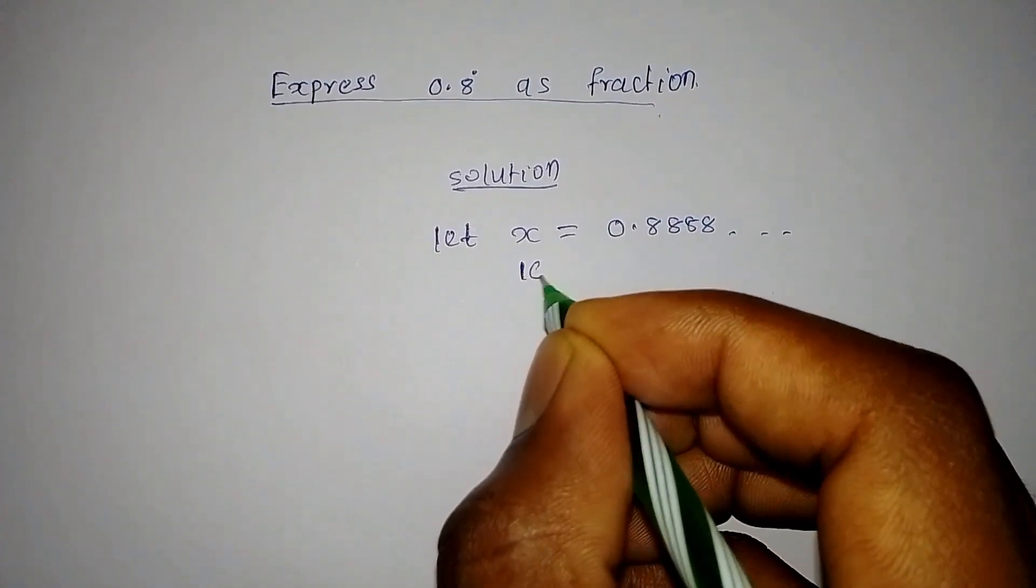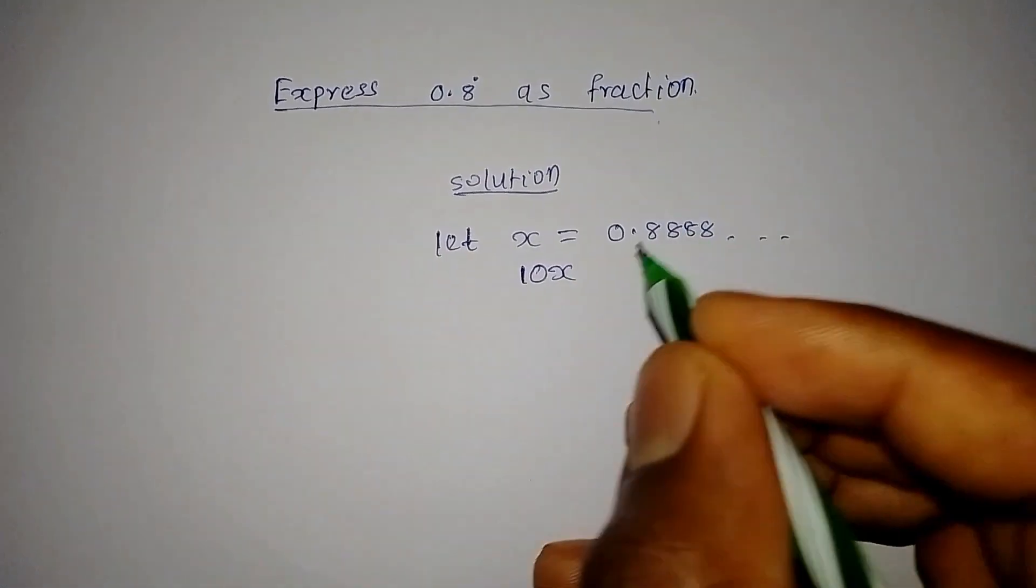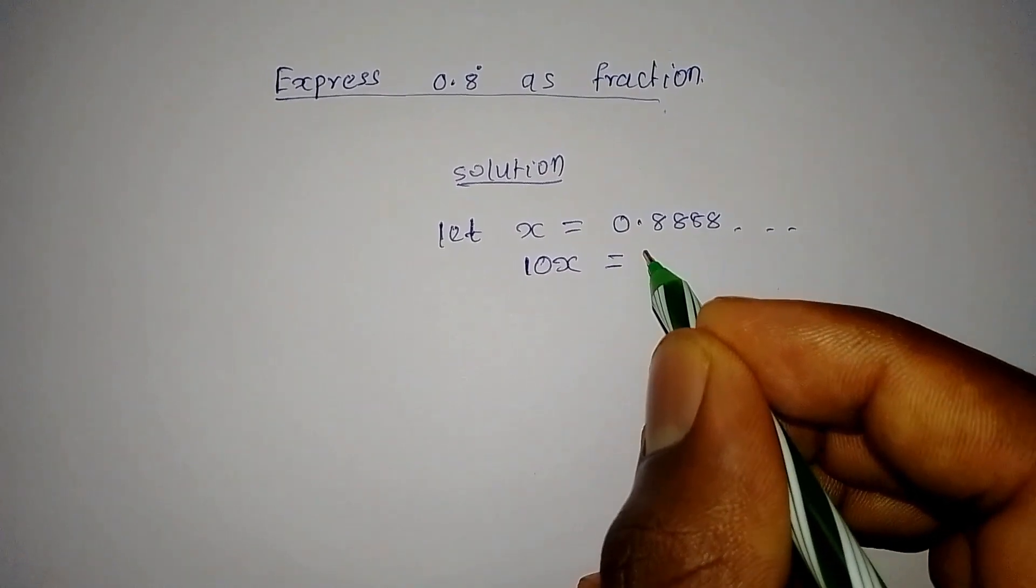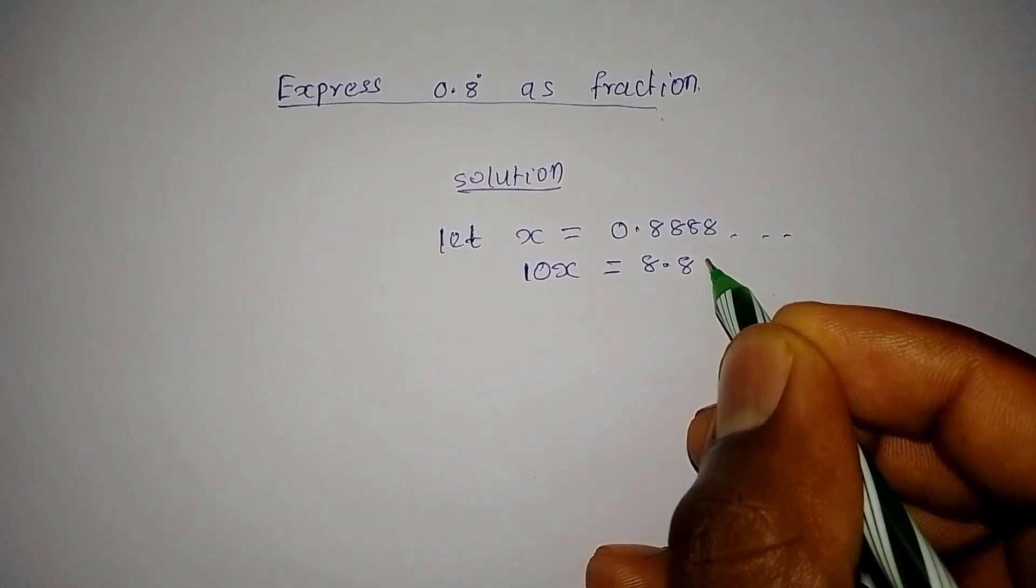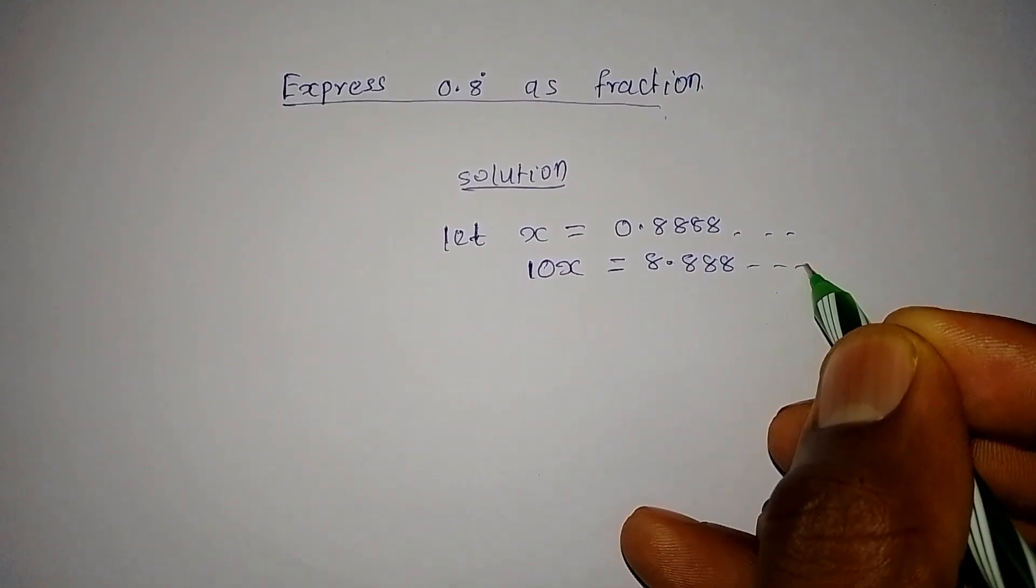Let's move to 10x. What will it give us? 10x will give us 8.888, which is recurring.